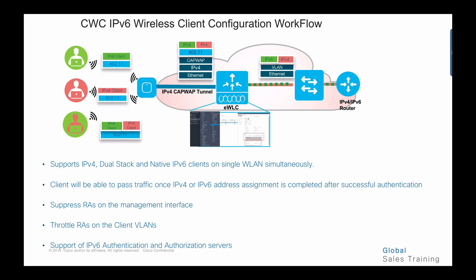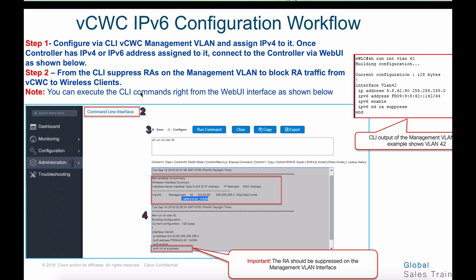When we have client configuration on the CWC controller, we need to support features such as the ability to support dual client, native IPv6 client, and we need to suppress RA on a management interface or throttle RAs on a client WLAN. The first step would be to configure CLI and management VLAN and assign IPv4 and IPv6 addresses to it.